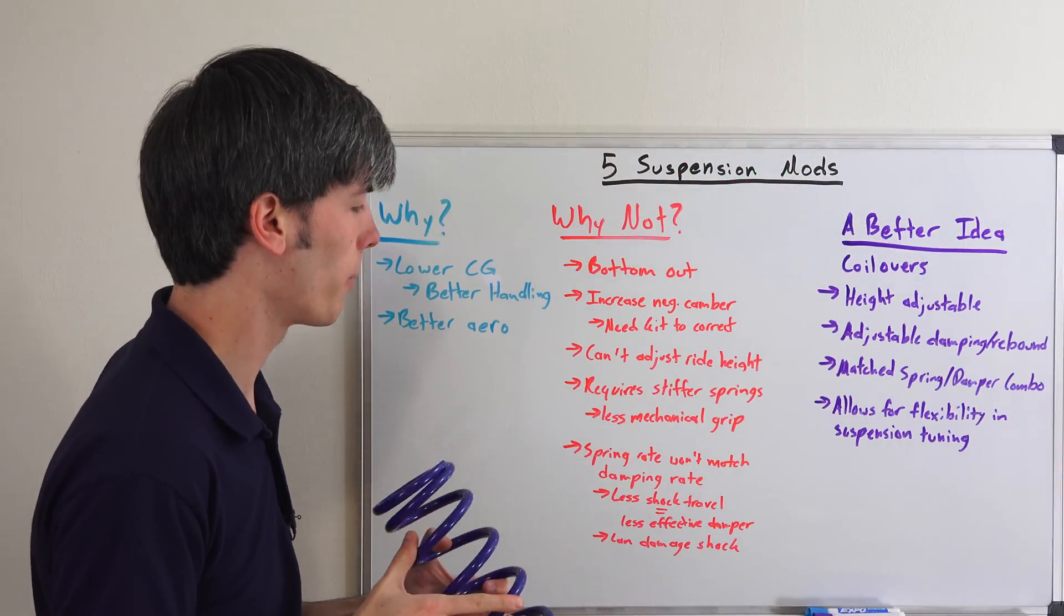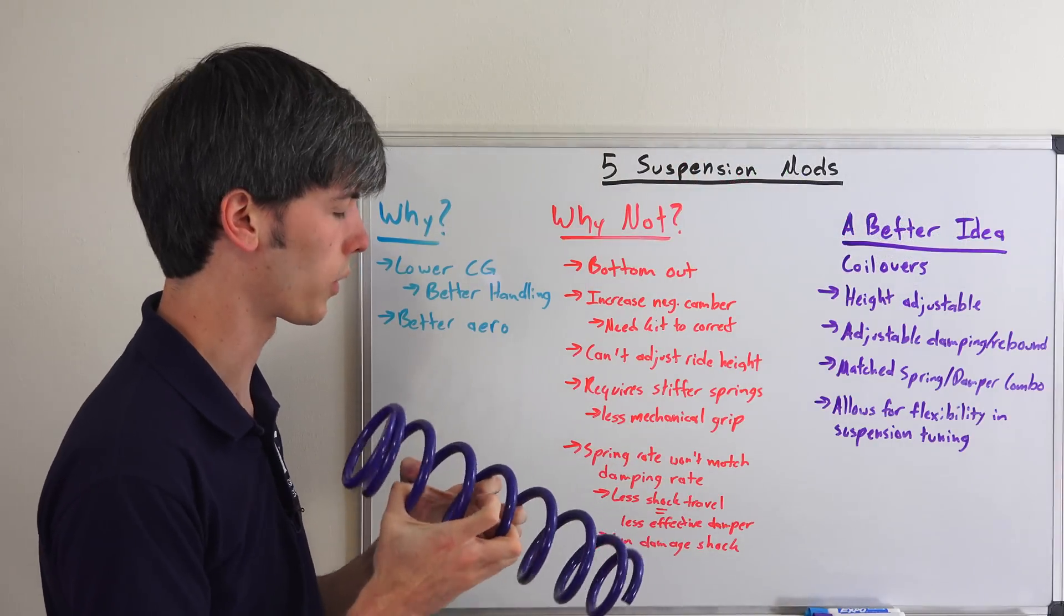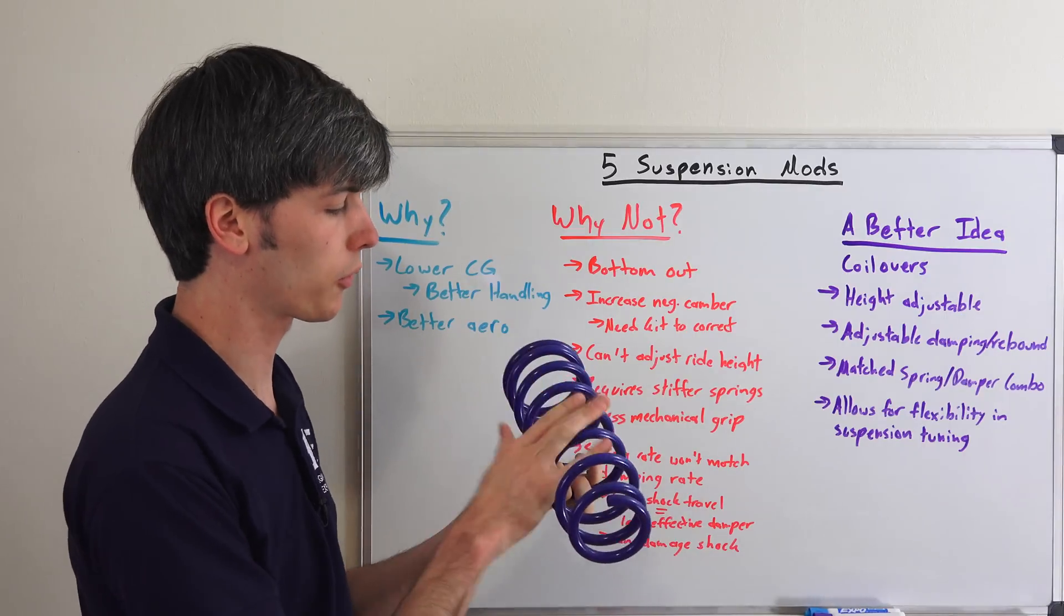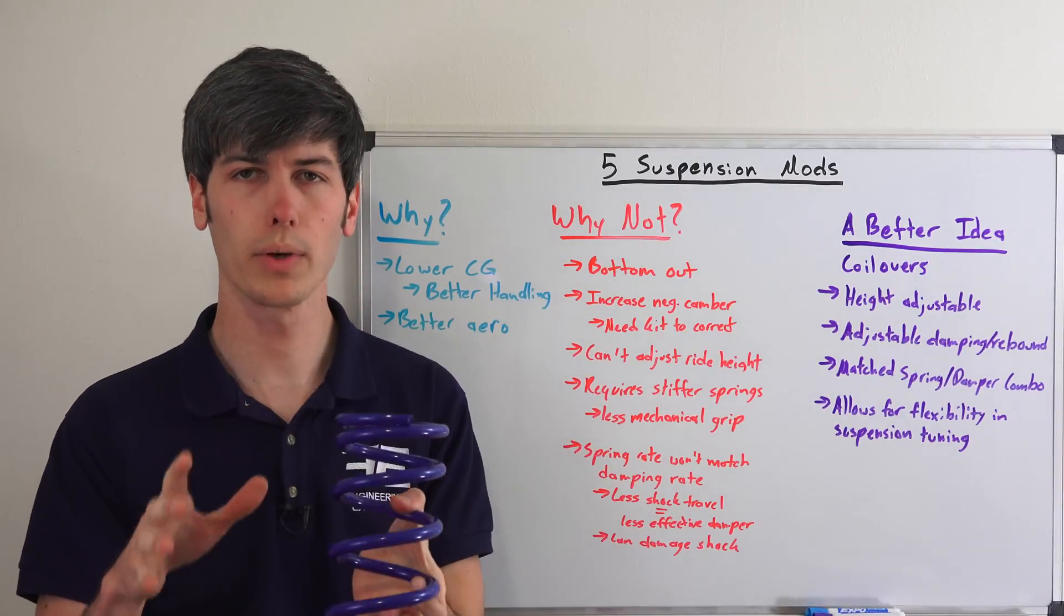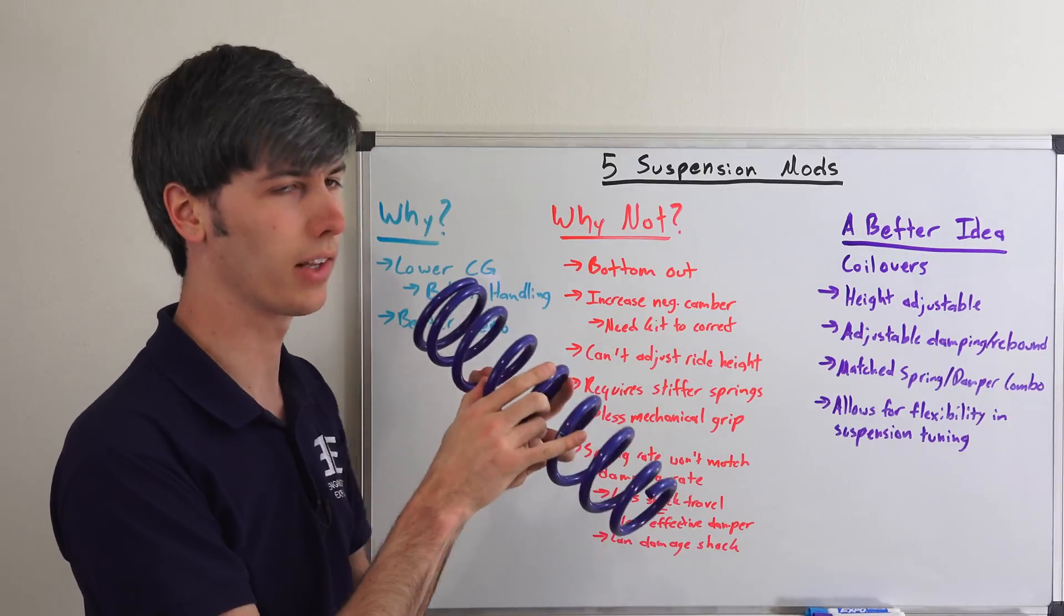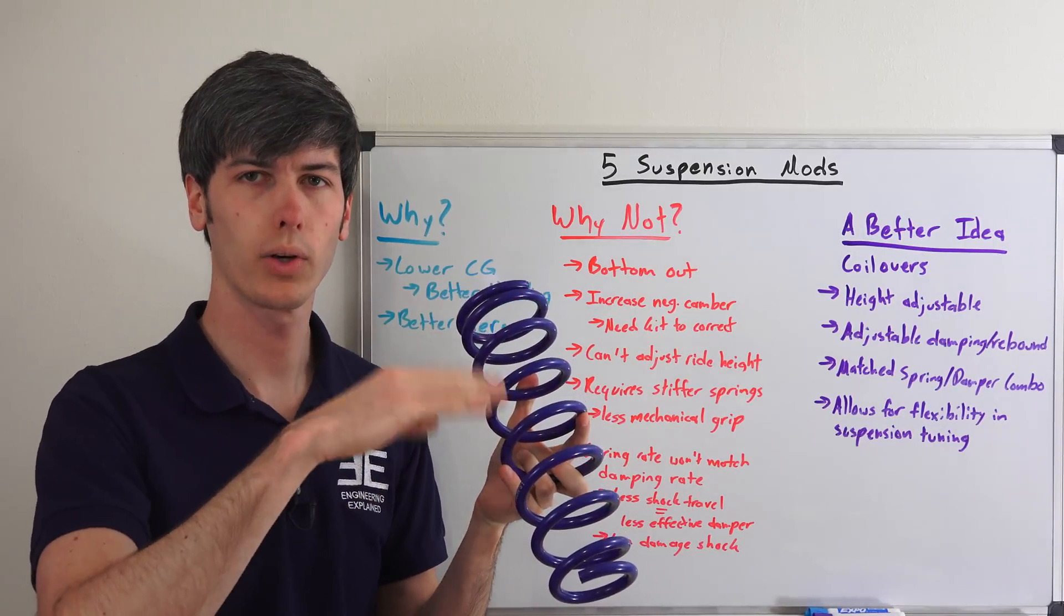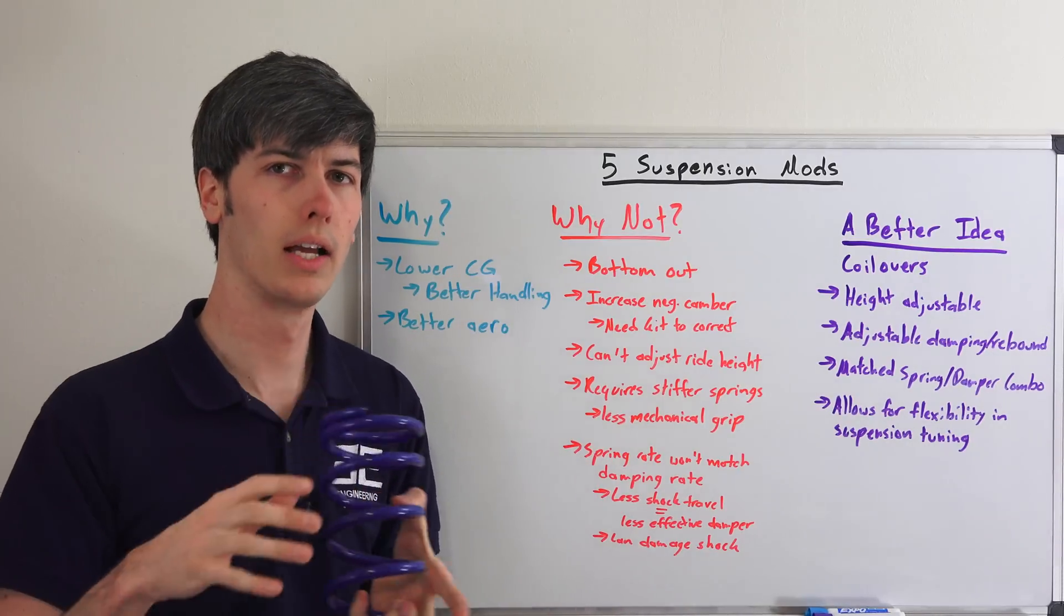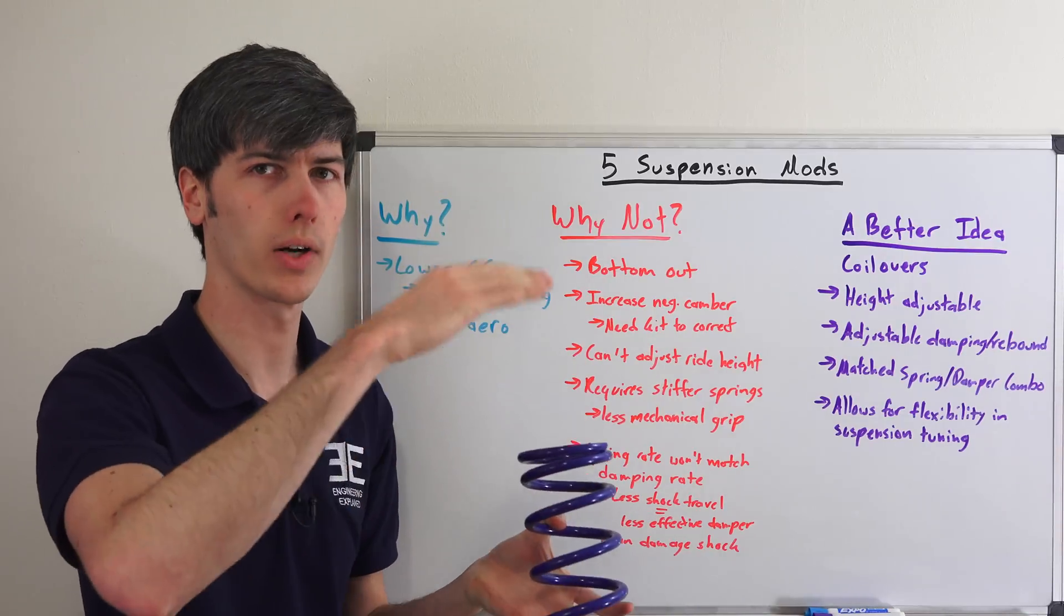Next, the spring rate won't match the damping rate, and this is one of the critical reasons why you wouldn't want to do it. Basically you're going to have a stiffer spring which you're matching with your original shock, and the damping rate isn't going to match the spring rate. The spring rate is now stiffer, meaning you get less travel overall of the suspension.